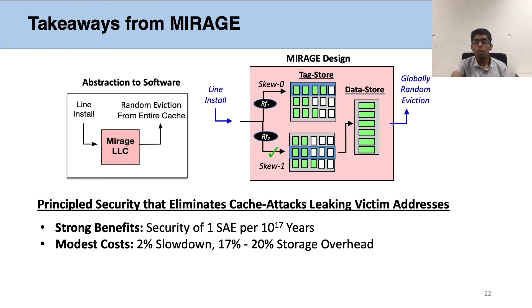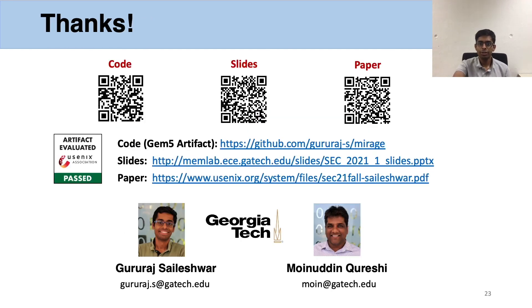In conclusion, Mirage is a principled secure cache design that eliminates cache attacks which leak victim addresses. It has the strong security benefit of not having a single set-associative eviction even in the lifetime of the universe, and these benefits come with modest costs. The code for the GEM5 implementation of Mirage, which passed artifact evaluation, is available on GitHub. Please reach out if you have any questions. Thank you.